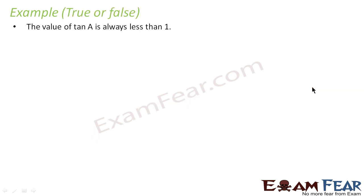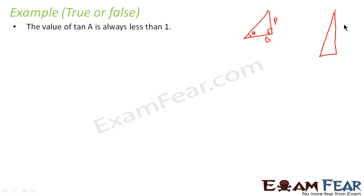Let us see whether the following statements are true or false. First: the value of tan is always less than 1. Since tan theta equals P divided by B, we can have a triangle where P is very large and B is very small, making tan theta greater than 1. Conversely, with a large B and small P, tan theta is less than 1. So tan can be greater than or less than 1 — this statement is false.